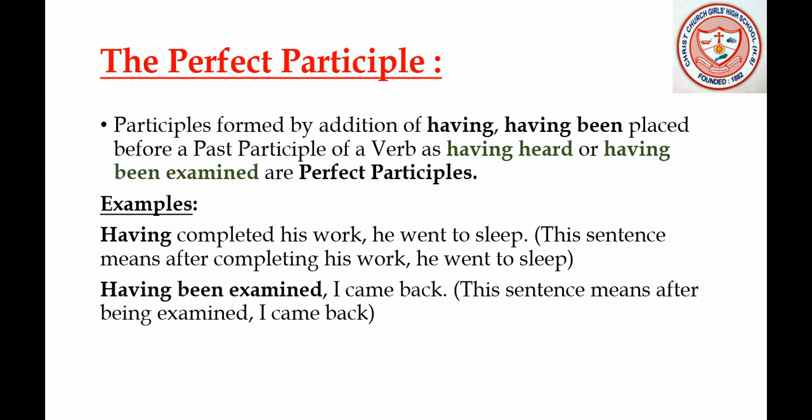Now we shall study about the perfect participle. Participles formed by adding 'having' or 'having been' before a past participle of a verb — such as 'having heard' or 'having been examined' — are perfect participles. Example: 'Having completed his work, he went to sleep,' which means that after completing his work, he went to sleep.